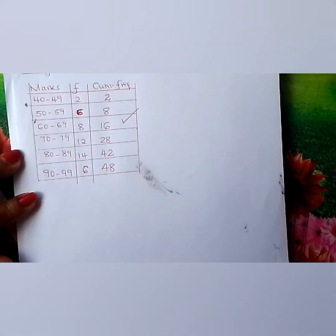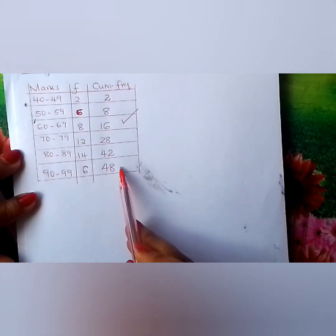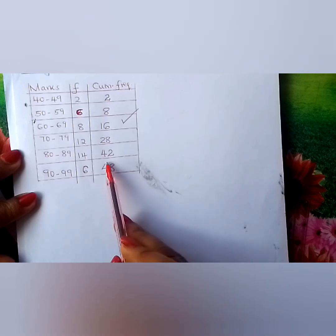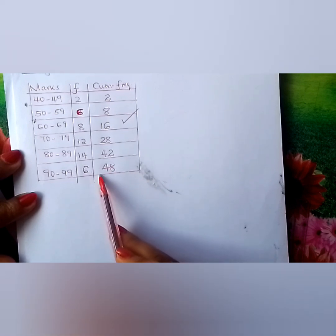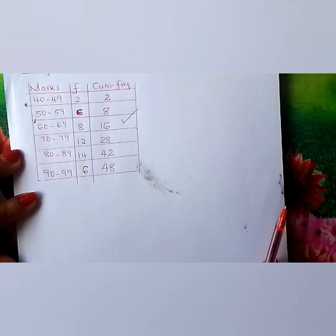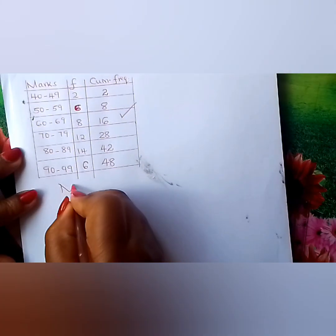In short, we are dealing with 48 students. These are marks scored by 48 students in a class. So how do you calculate the median?